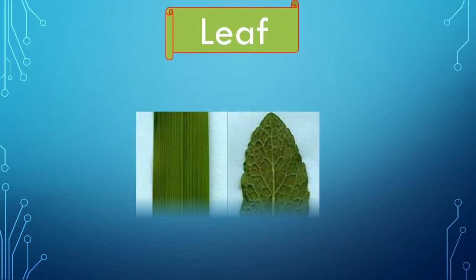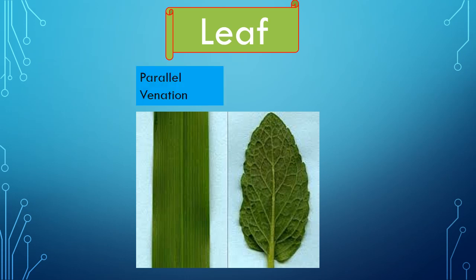Venation is also present in the leaves. You can see on your screen two different leaves. The first leaf is of a monocot plant while the second leaf is of a dicot plant. In the case of a monocot plant, the venation is parallel — that is, the veins are parallel to each other. While in the case of a dicot plant, the venation is reticulate venation — that is, there is a network of midribs and capillaries.